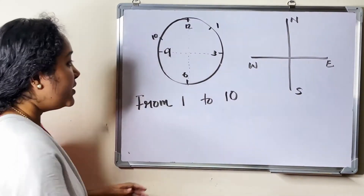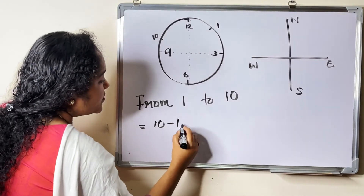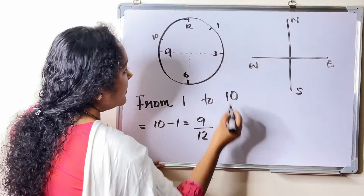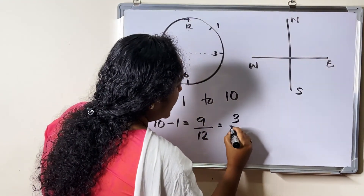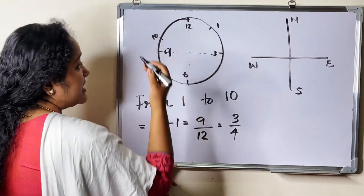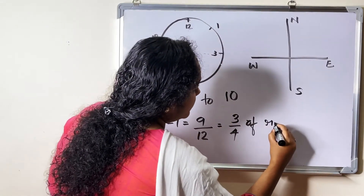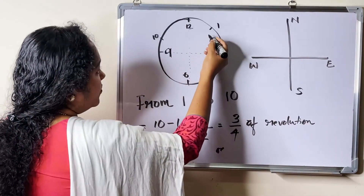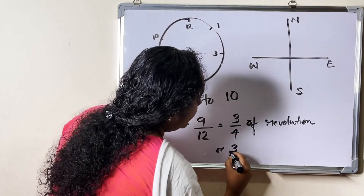Next, from 1 to 10. Then 10 minus 1 equals 9, divided by 12 for 1 revolution, which is equal to 3/4. So from 1 to 10 is 3 fourths of a revolution, or 3 right angles.